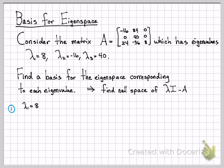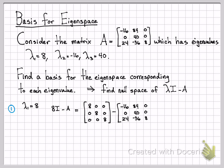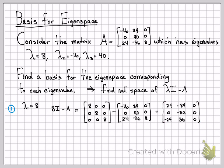Starting with eigenvalue equal to 8: I need to compute 8I minus A, which is the identity matrix scaled by 8, minus the original matrix A. Doing the arithmetic gives me this matrix right here, and I need to find the null space of that matrix.